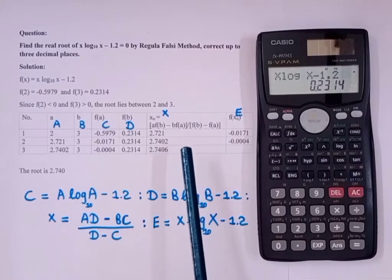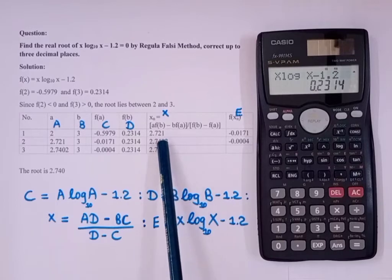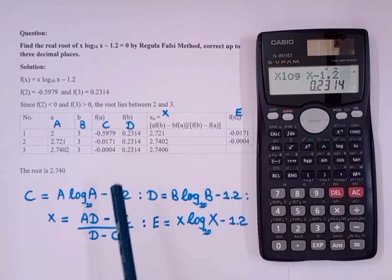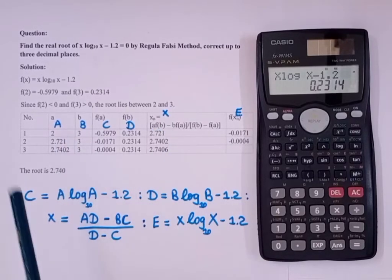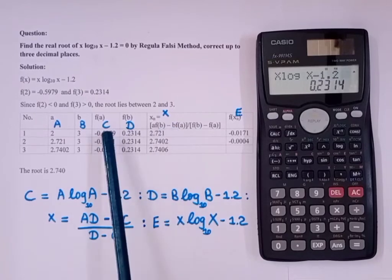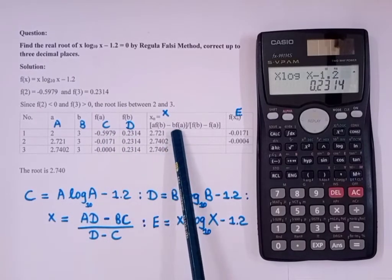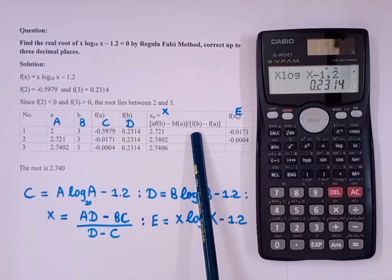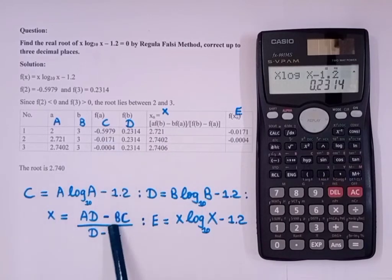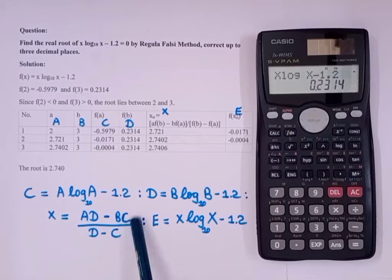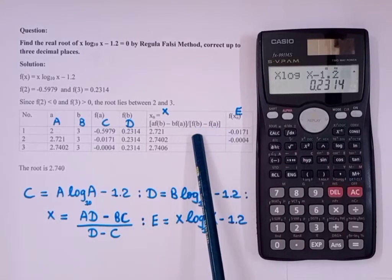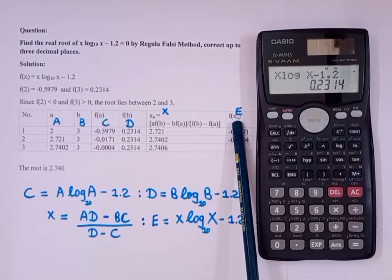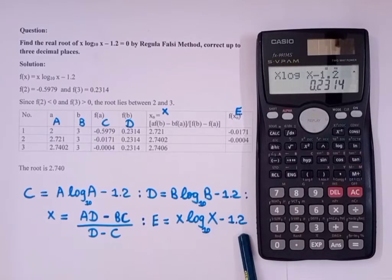And what is this x? This x is xn. That is, for finding the iteration, we use the equation: a times f(b) minus b times f(a) divided by f(b) minus f(a). So what is our a? Our a is capital A. Then f(b), which is capital D. b minus b, which is denoted by capital B. And C, that is f(a). So it will be AD minus BC divided by D minus C. And then what is this E? This E is f(xn), which will be x log x minus 1.2.